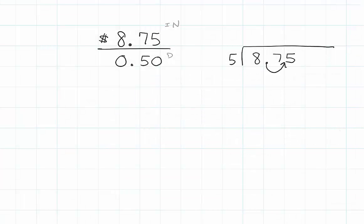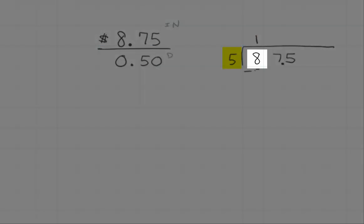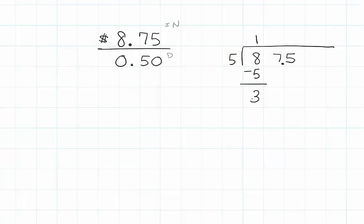So 8.75 becomes 87.5, and now we can divide. 5 goes into 8 one time. When I subtract 5, I get 3. Bring down the 7.